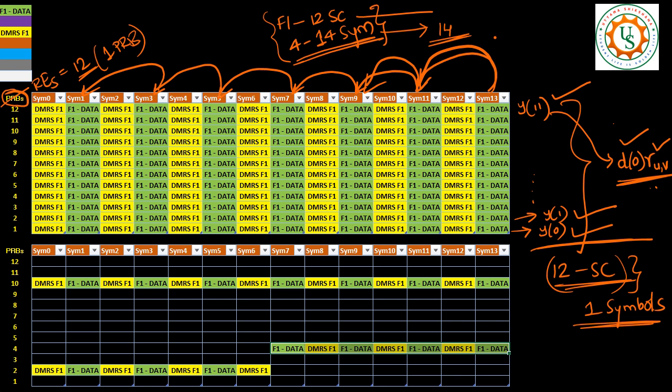So, at the receiver end, since we have the same data replicated 7 times across 7 symbols, we can perform what is called averaging. Averaging can be performed 7 times, and this averaging improves the SNR.